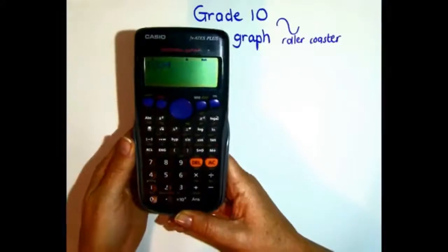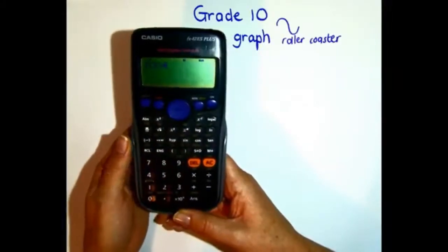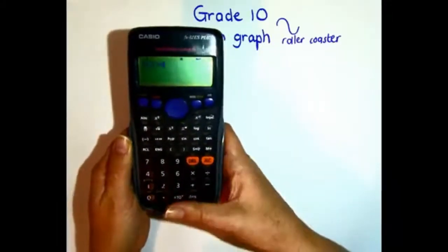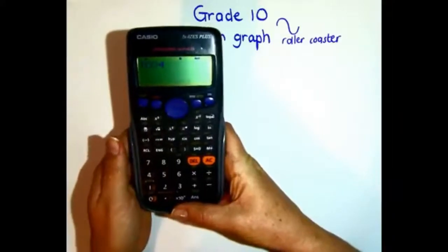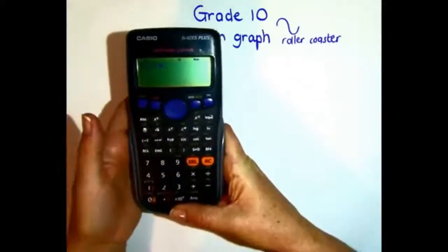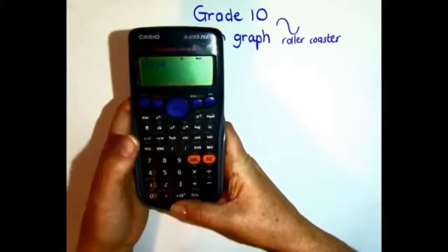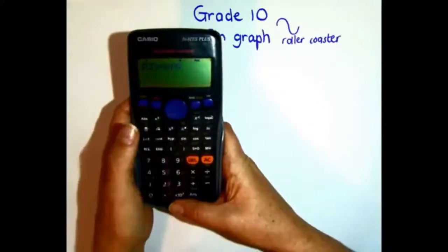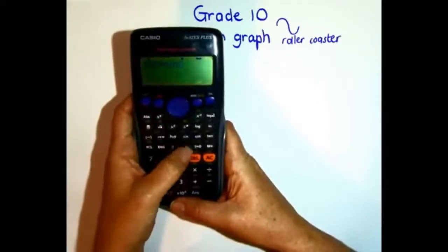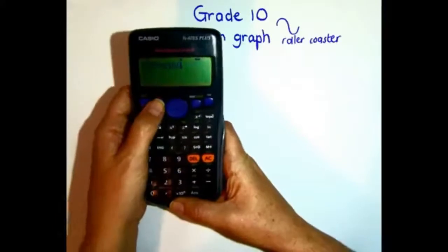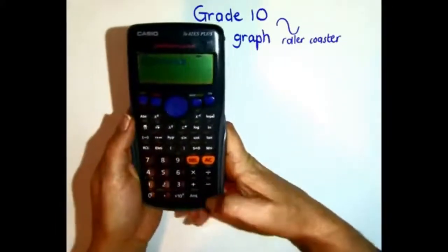Then it gives you f(x) equals, and there's your opportunity to write in the graph you're going to do. You're going to put in the formula for the graph for which you want a table. So we're going to say sin, and then we want x. Remember that little x comes from the alpha button—it's down there, it's the red one. So we're going to go sin(x) equals.